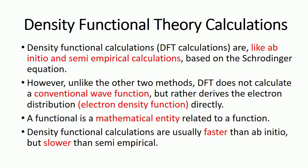Density functional calculations are like ab initio and semi-empirical calculations because they are all based on the Schrödinger equation. If I compare DFT with the other two methods — ab initio and semi-empirical — in both ab initio and semi-empirical methods, we have to consider each electron in a system.